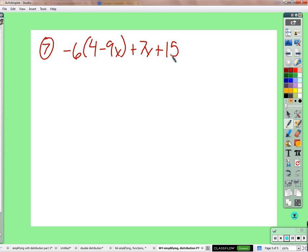Okay, so I don't know. I don't know how many times I can say the same thing. Negative 6 times a 4, negative 24. Negative 6 times a negative 9x is a positive. Negative times a negative is positive.